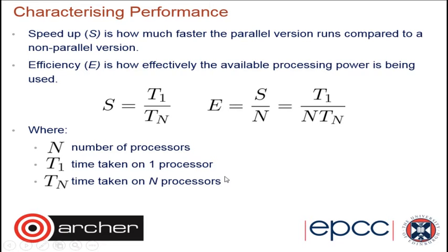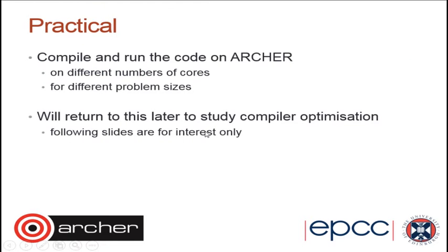Later in the exercise, you'll look at the performance of the parallel version of the code using performance metrics discussed in an earlier lecture: namely speedup — how much faster the parallel version runs for N processes compared to one process — and efficiency. You'll compile and run the code on Archer, run it on different numbers of cores, and try different problem sizes. After a lecture on compiler optimizations, we'll return to this exercise to look at the effect of those optimizations.